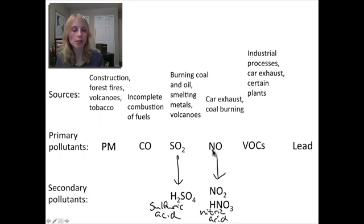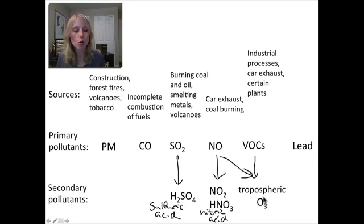When VOCs react with nitrogen oxide in the atmosphere, they produce tropospheric ozone. This is the so-called bad ozone. We also have good ozone in our stratosphere, which protects us from damaging UV rays. This is ozone present in the troposphere that forms from the reaction of nitrogen oxides and VOCs, and it is considered a pollutant.